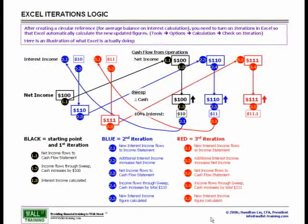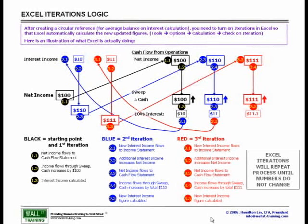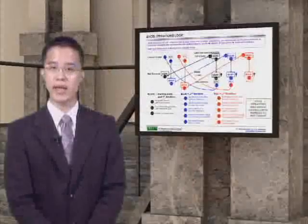Again, at the same 10% interest rate, this means we now have interest income of $11.10. Excel will repeat this process until there are no changes to any of these numbers.